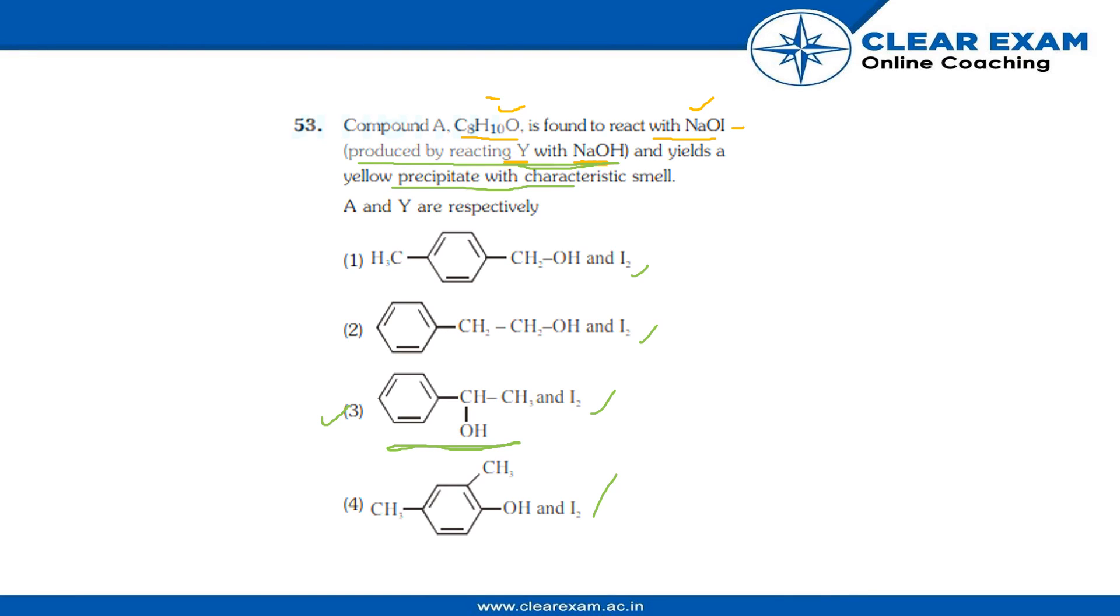The option is third because of this reason: first of all, this is a secondary alcohol, and with oxidation and reaction with I2 and NaOH, it would give yellow precipitate and characteristic smell.